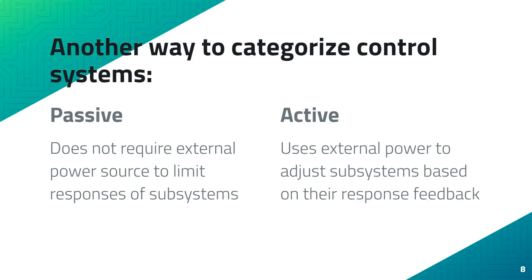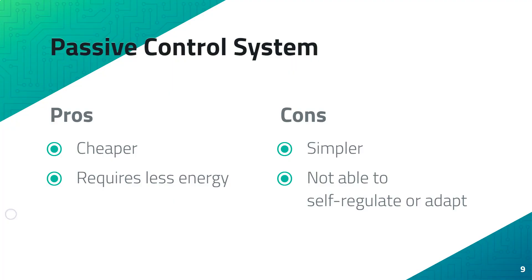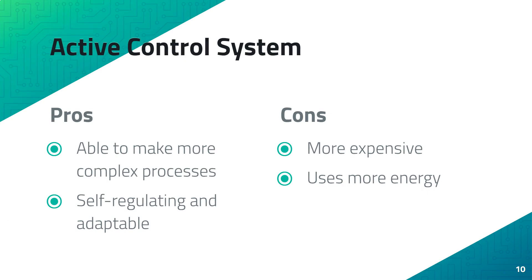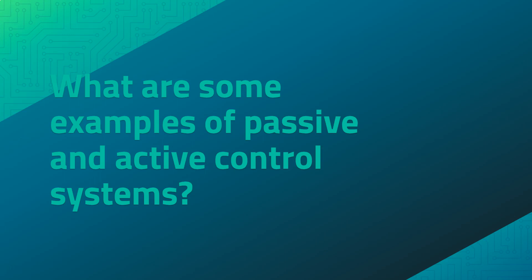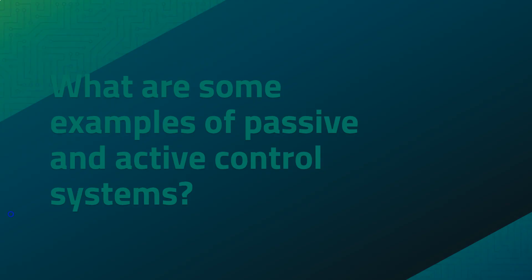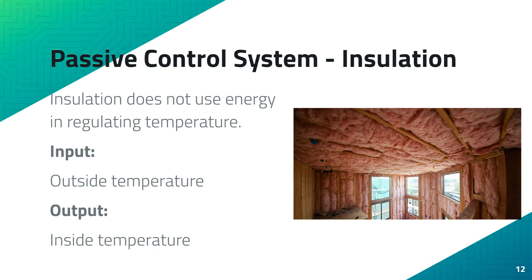Passive control systems are cheaper and require less energy; however, they're simple and are unable to adapt to new conditions. Active control systems are the opposite — they are more complex and can adapt and self-regulate, however they're more expensive and more energy demanding.